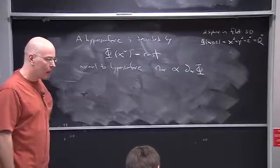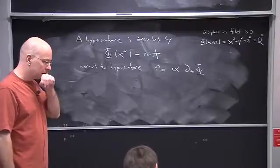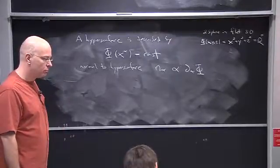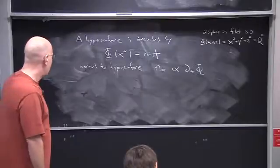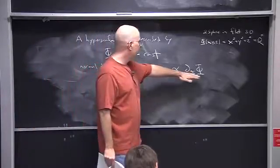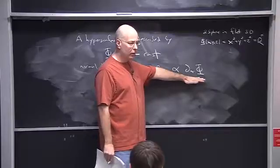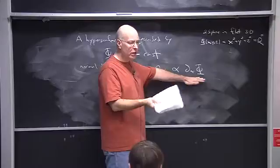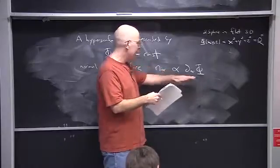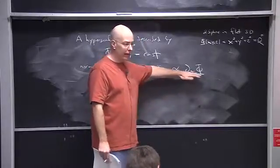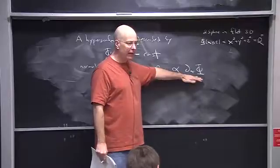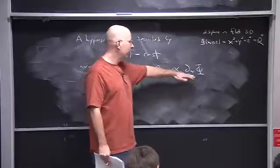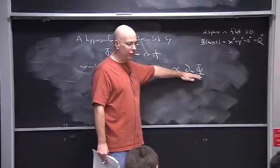A question from the audience: is this normal defined with respect to the Lorentzian metric? Well, this notion of a normal defined as a gradient doesn't refer to the metric at all. Of course, if I want to convert it to a vector I would need the metric to raise the index. At this stage I'm defining it as a one-form, and that doesn't require a metric. So the normal one-form is the gradient one-form of that scalar function.